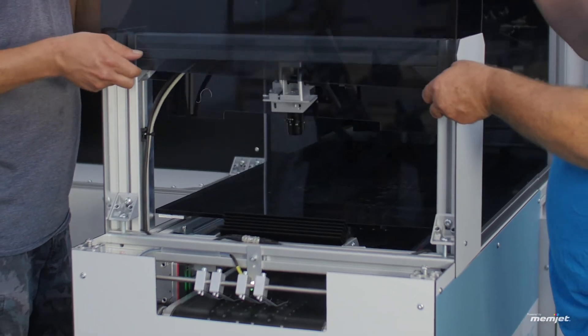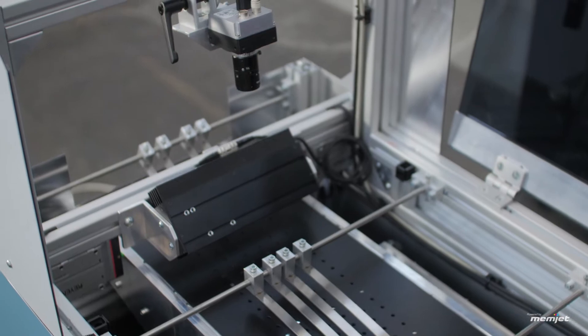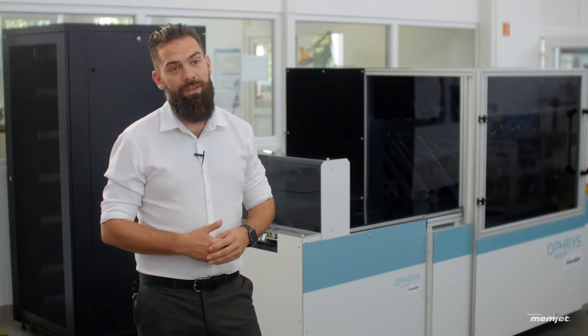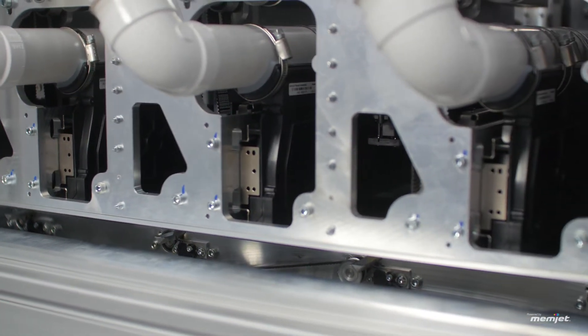And it has a pre-print module which has a vision system for identifying the envelopes when they have the inner content in them. And it has a laser micrometer for measuring the thickness of the envelopes to be able to accommodate to that thickness in the print engine.